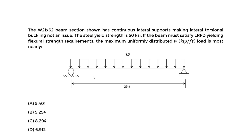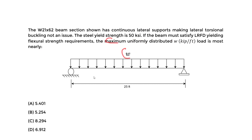The steel yield strength is 50 KSI. If the beam must satisfy the LRFD yielding flexural strength requirements, the maximum uniformly distributed load omega is most nearly what? So we want to find the maximum uniformly distributed load, which is this omega.